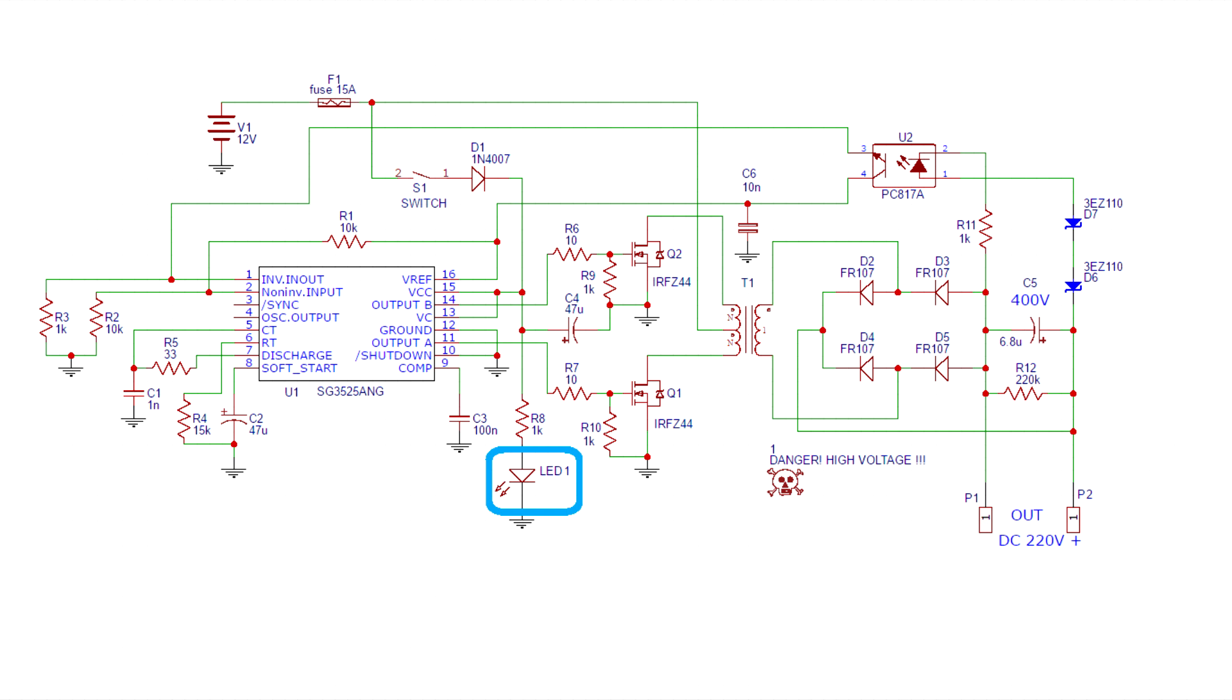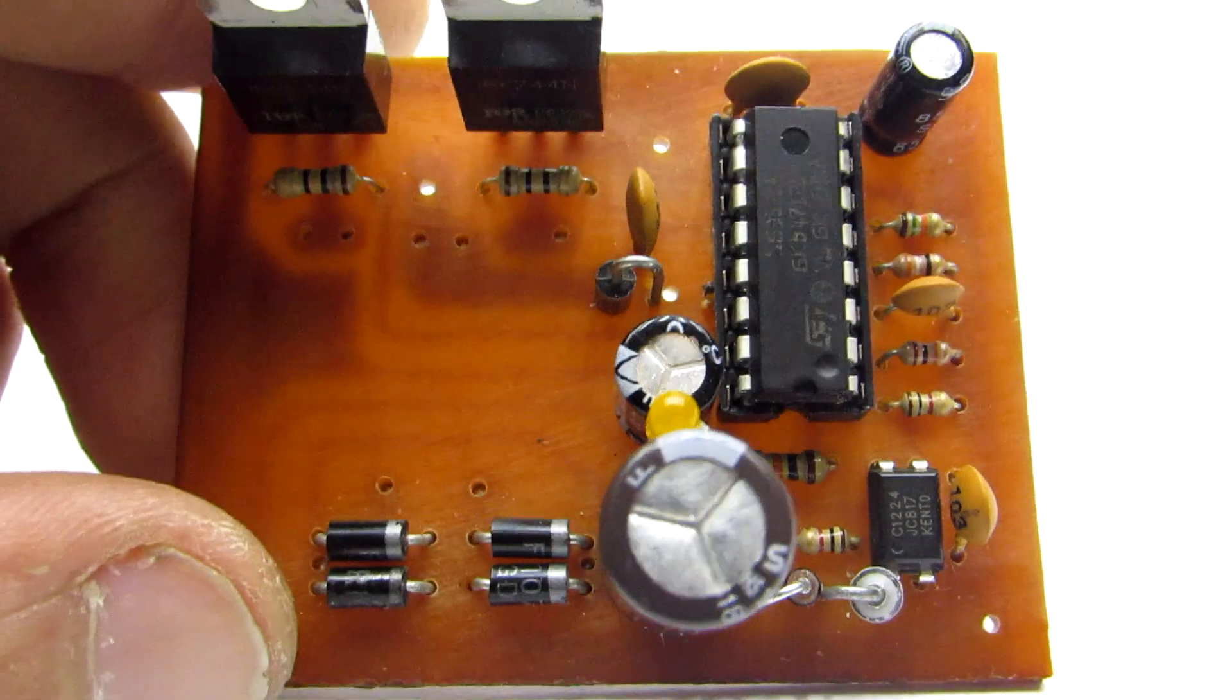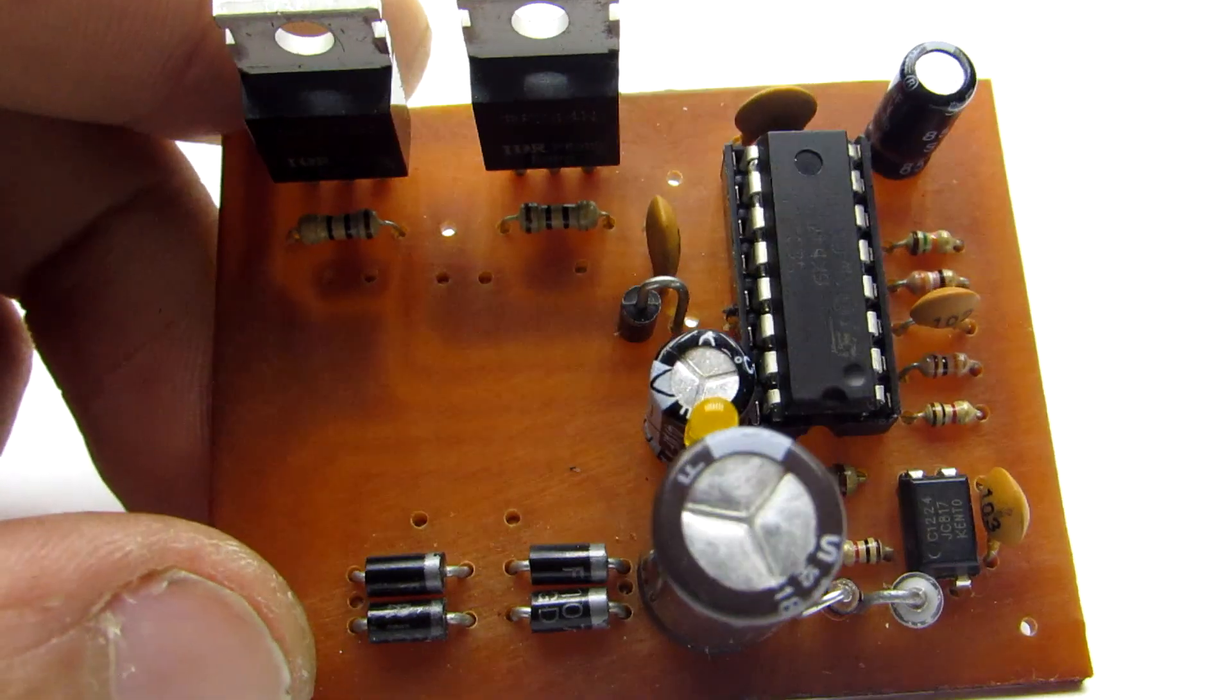There is also a LED indicator and the reverse polarity protection function. This function is based on a conventional diode, which simply locks in case if you mix up the polarity of the power supply.